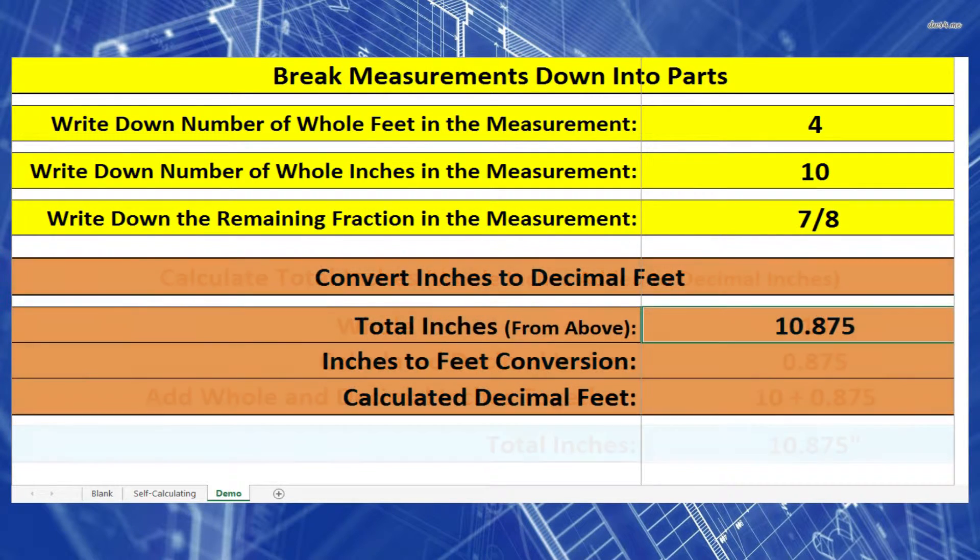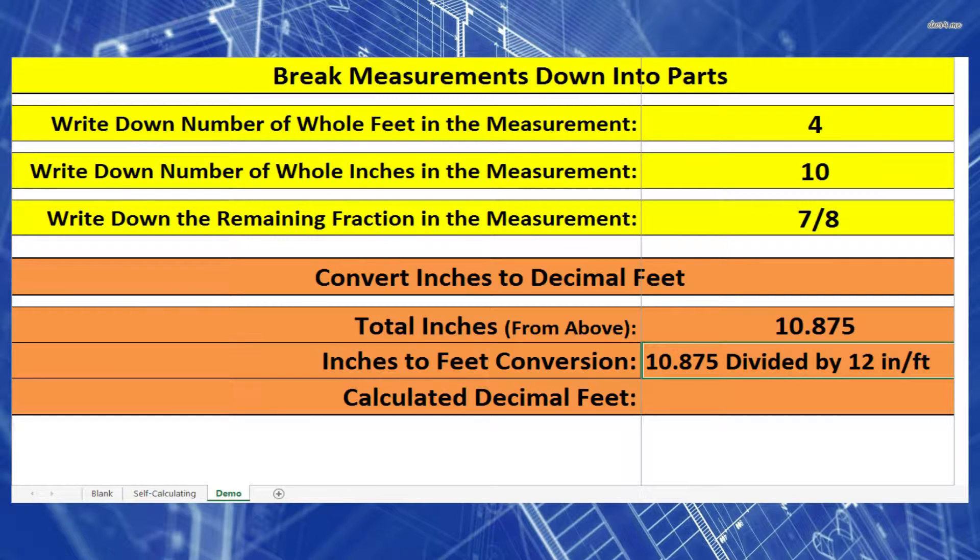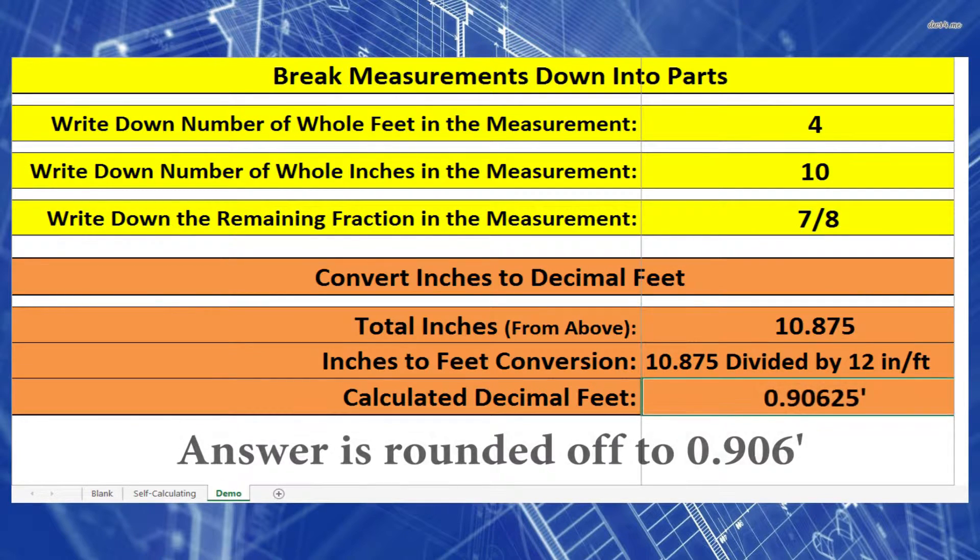Now we need to convert these inches and decimal inches back into feet. So I need to take 10.875 inches and divide it by 12 inches per foot. This will give me 0.906 feet.